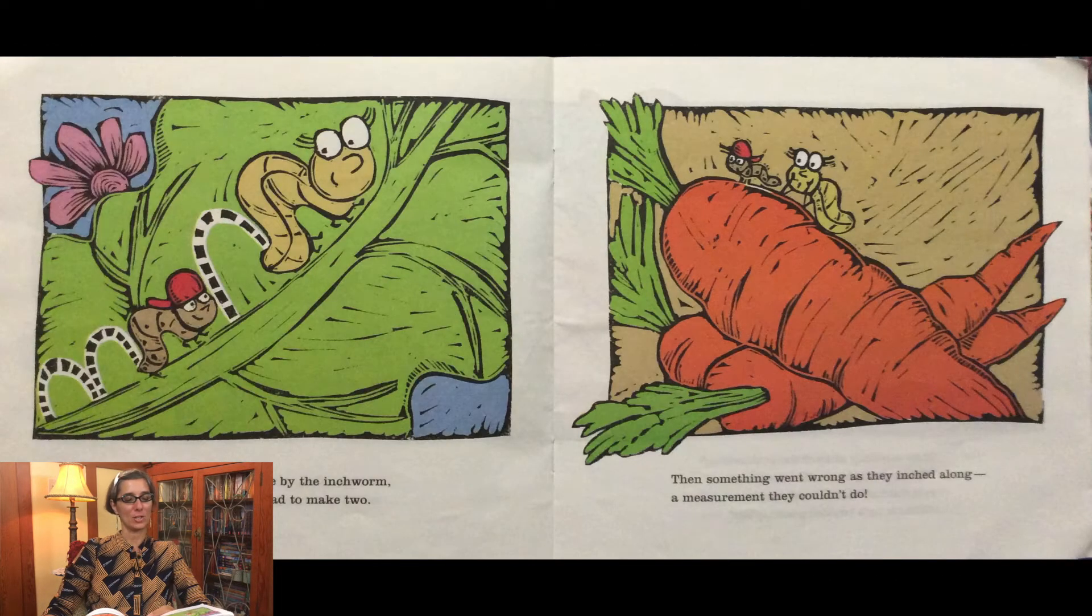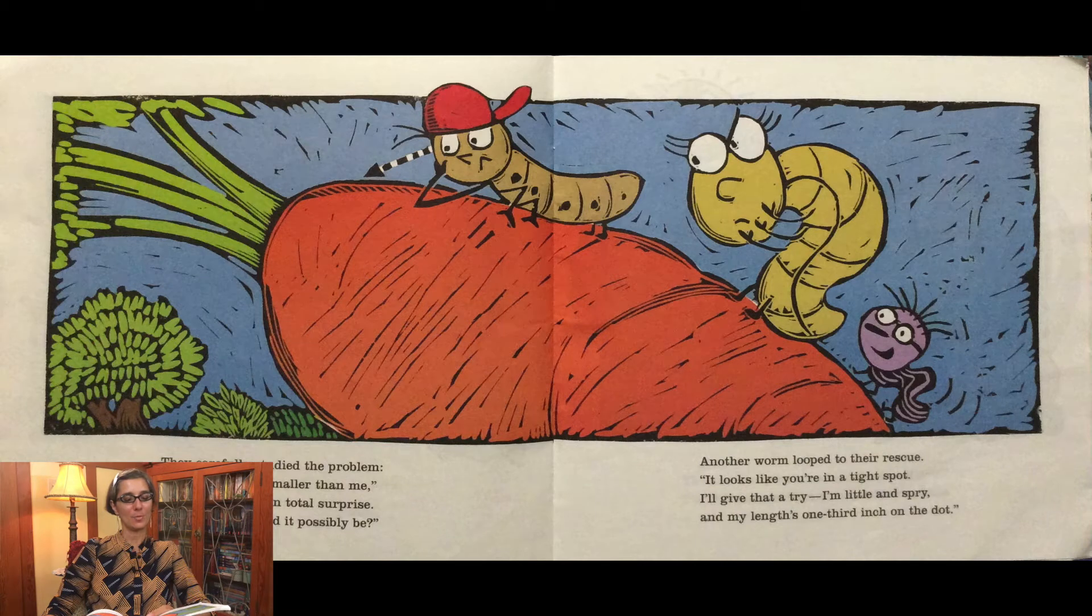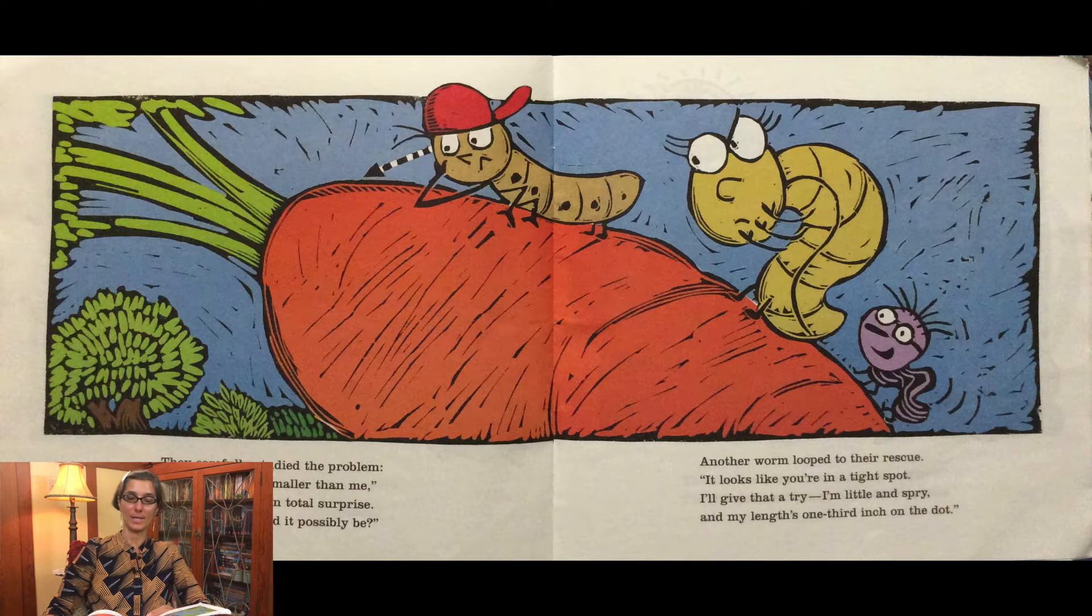For every loop made by the inchworm, the shorter worm had to make two. Then something went wrong as they inched along, a measurement they couldn't do. They carefully studied the problem. This fraction is smaller than me, said the half size in total surprise. What length could it possibly be?